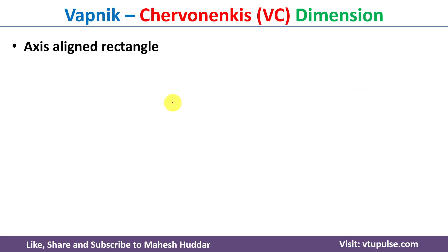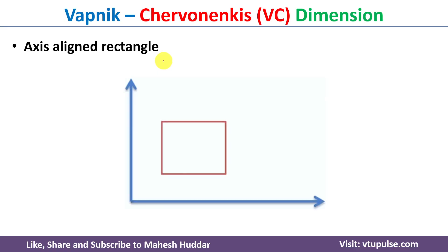Now let us consider one more classifier — the axis-aligned rectangle. An axis-aligned rectangle is one where the two edges of the rectangle are parallel to the axes of a given coordinate system, meaning one edge is parallel to the x-axis and the other is parallel to the y-axis.